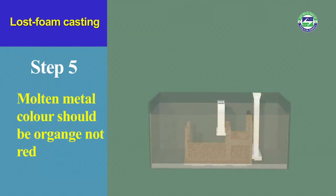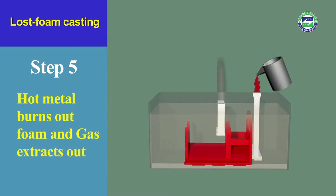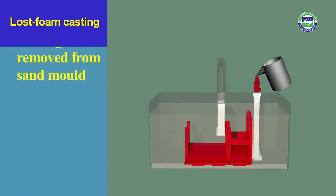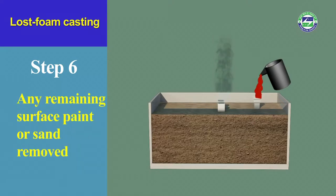Next, the molten metal is poured directly into the foam-filled mould, burning out the foam as it pours. As the foam is of low density, the waste gas produced is relatively lesser. Hence, the gas escapes through mould permeability. The permeability stops sand erosion.